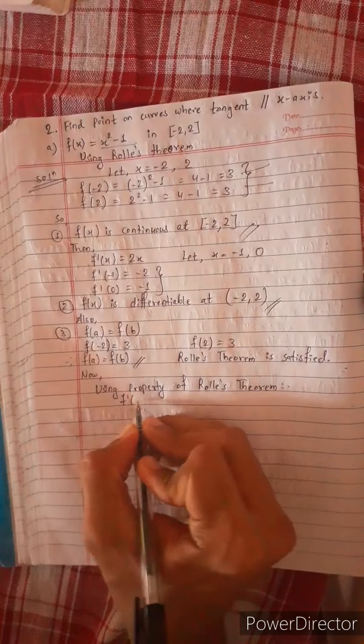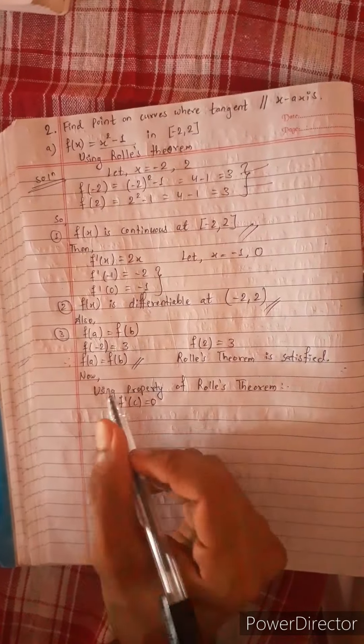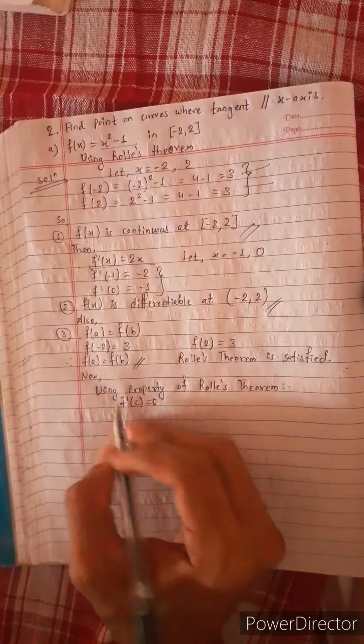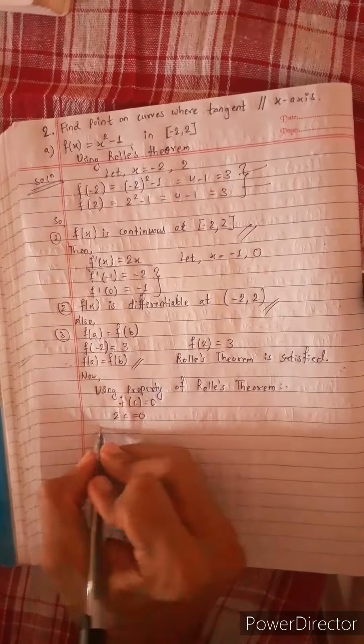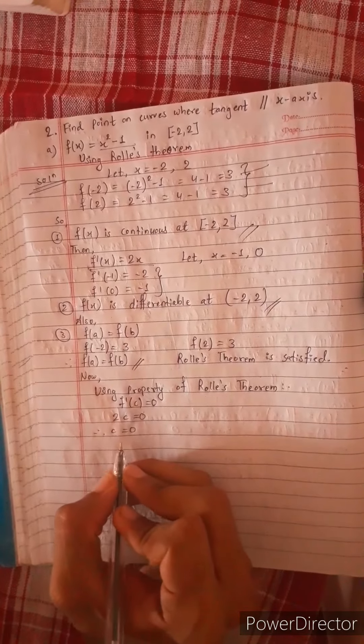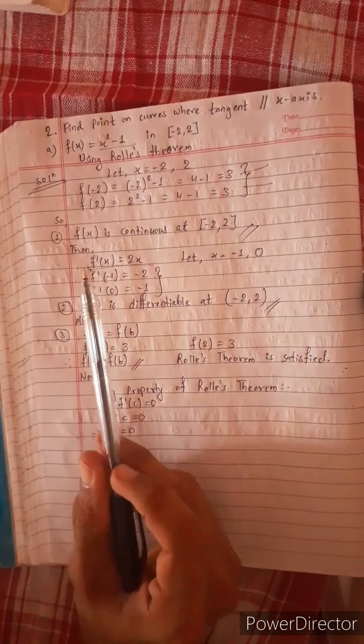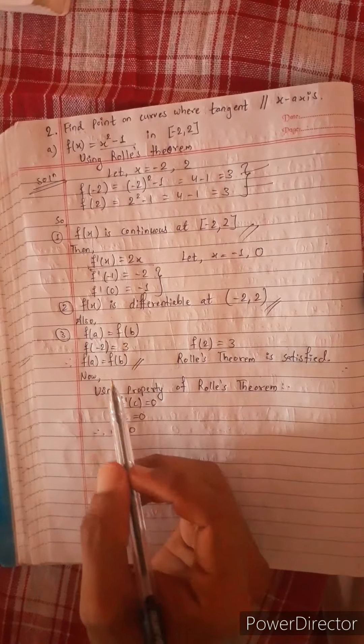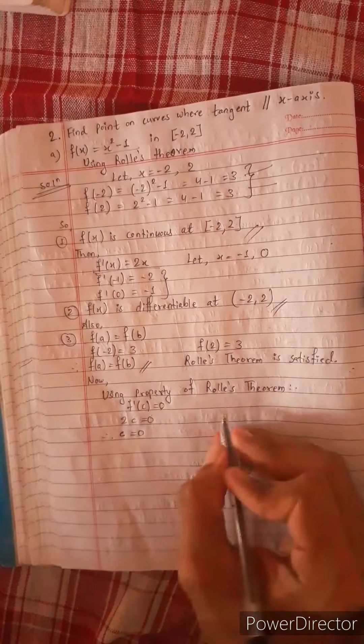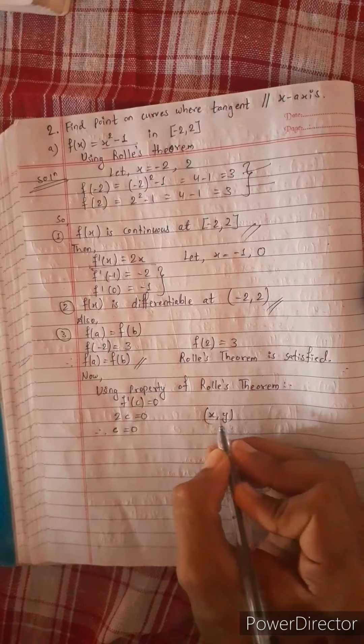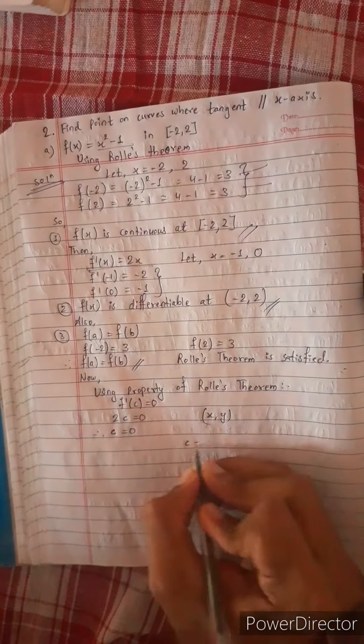F prime of c equals 0. The tangent is parallel to x-axis. If we call it 0, we call it x-axis. The condition is c equals to x.